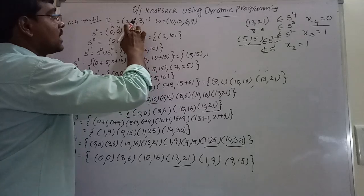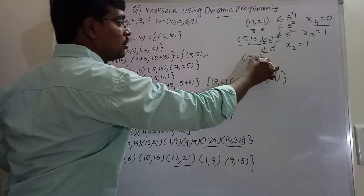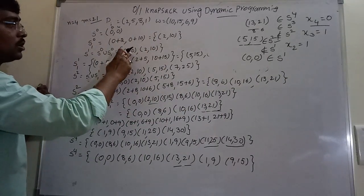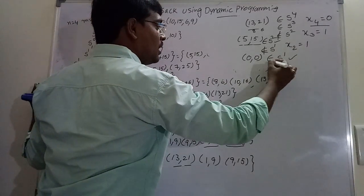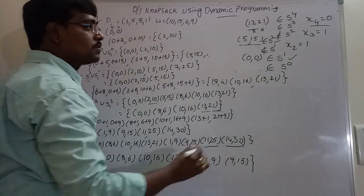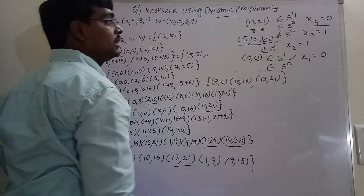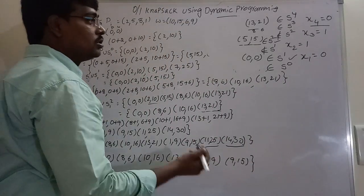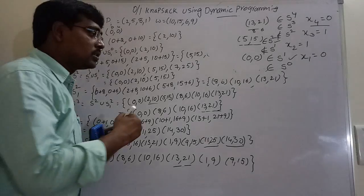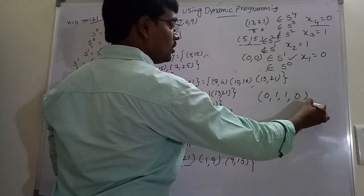Subtract the second pair (5,15): 5-5=0, 15-15=0, giving (0,0). Check whether (0,0) belongs to S^1 — yes it does. Check whether it belongs to S^0 — yes it belongs to S^0. So X1 = 0. The final knapsack instance is X = (0, 1, 1, 0).